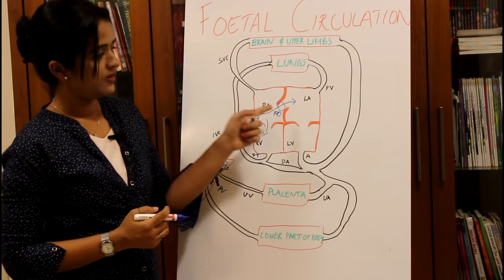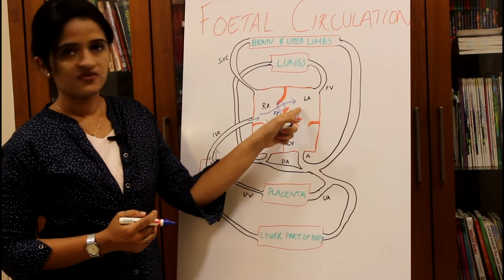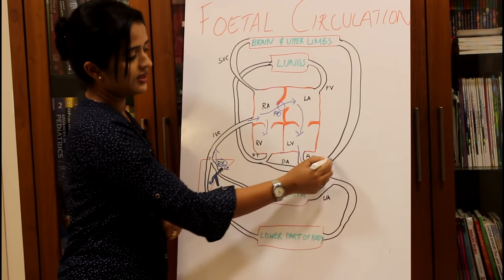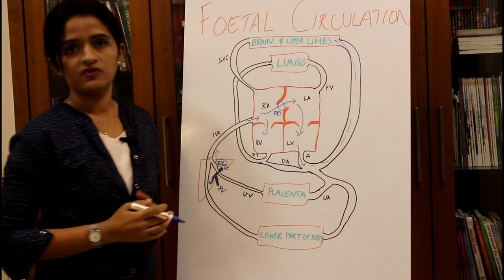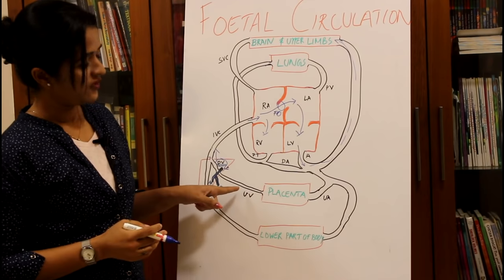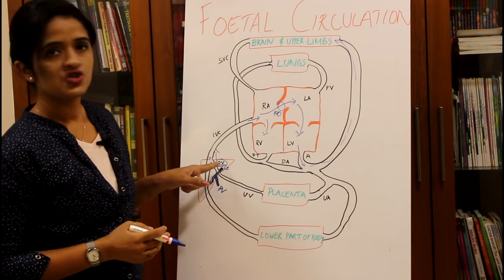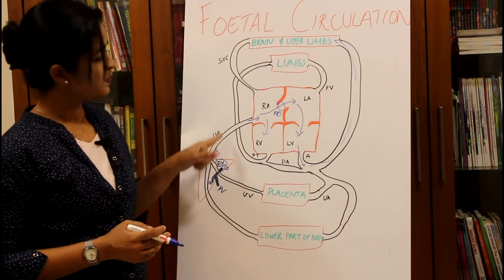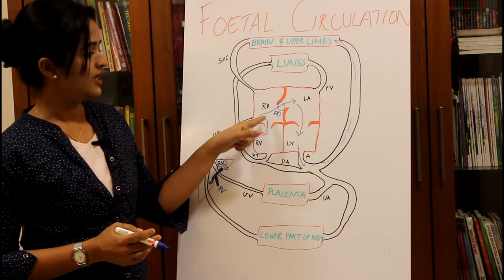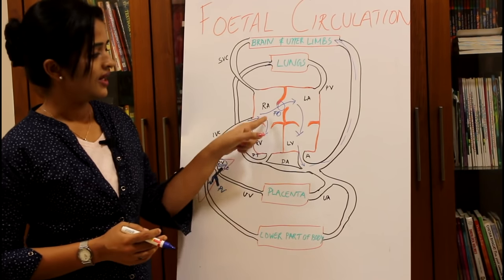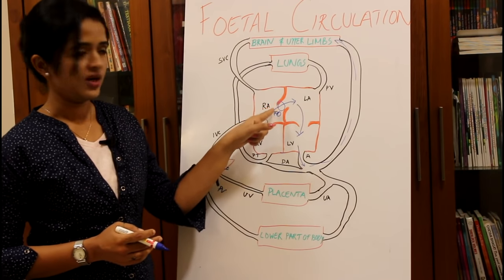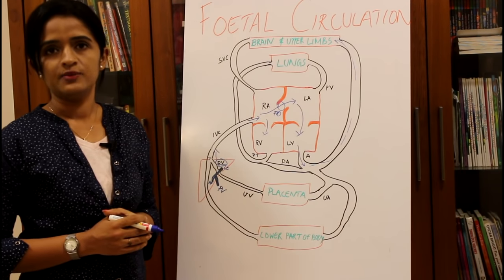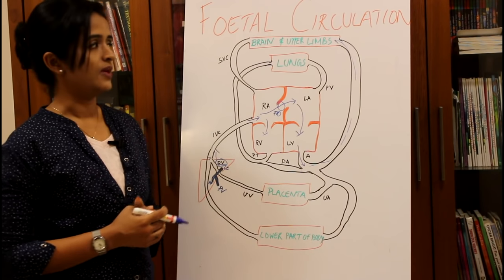The blood reaching the left atrium is carried to the left ventricle and finally into the aorta, thereby reaching the developing brain of the fetus. The purified blood from the umbilical vein is shunted at the liver through the ductus venosus so it doesn't get deoxygenated, then shunted again through the foramen ovale to the left atrium, ensuring maximum oxygenated blood reaches the developing fetal brain.